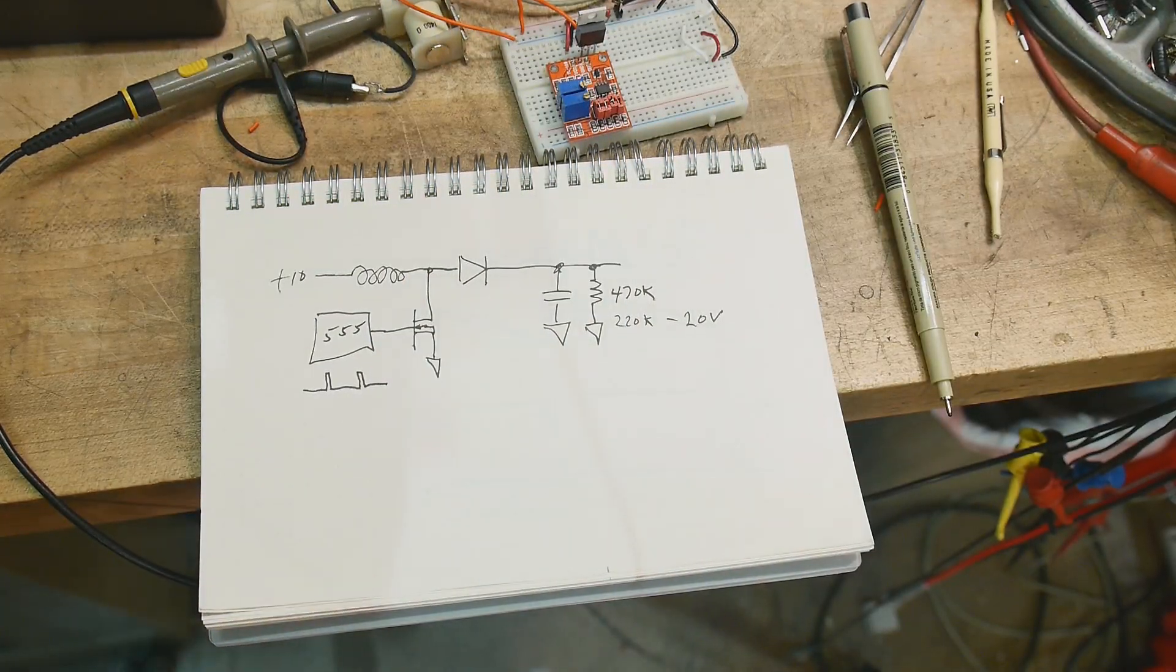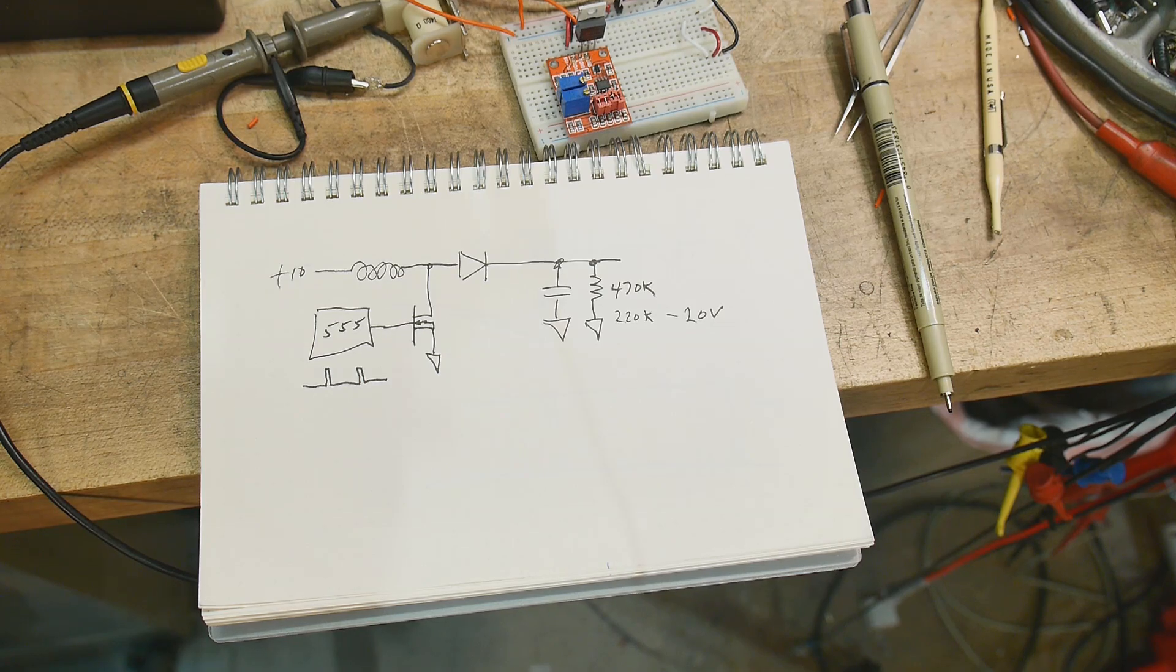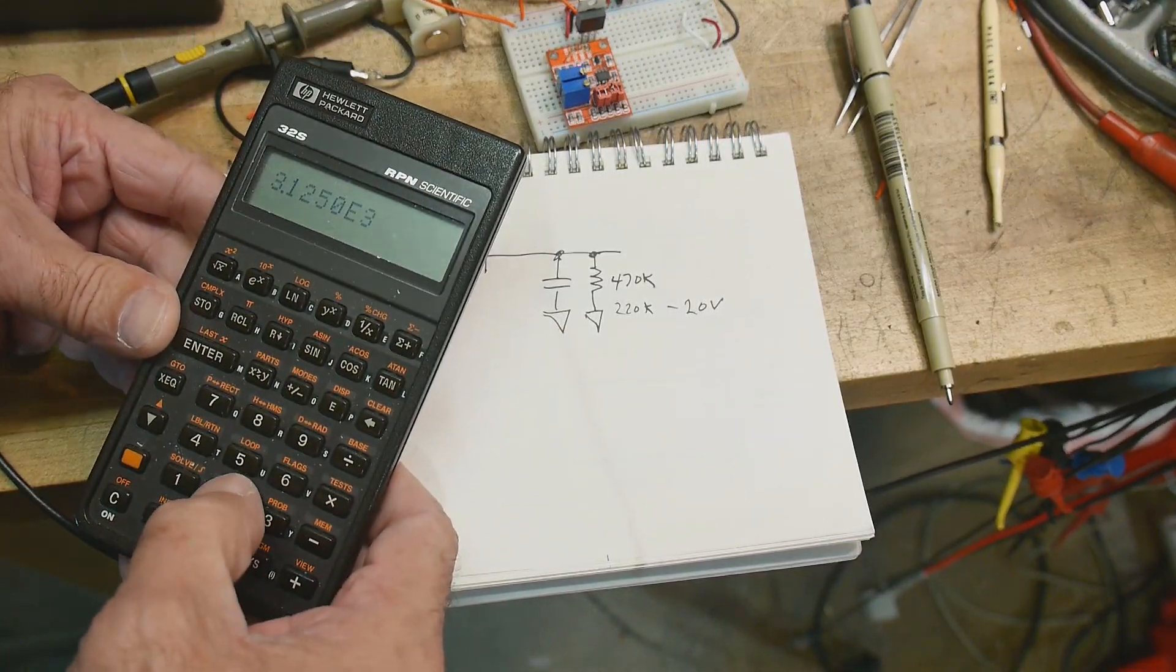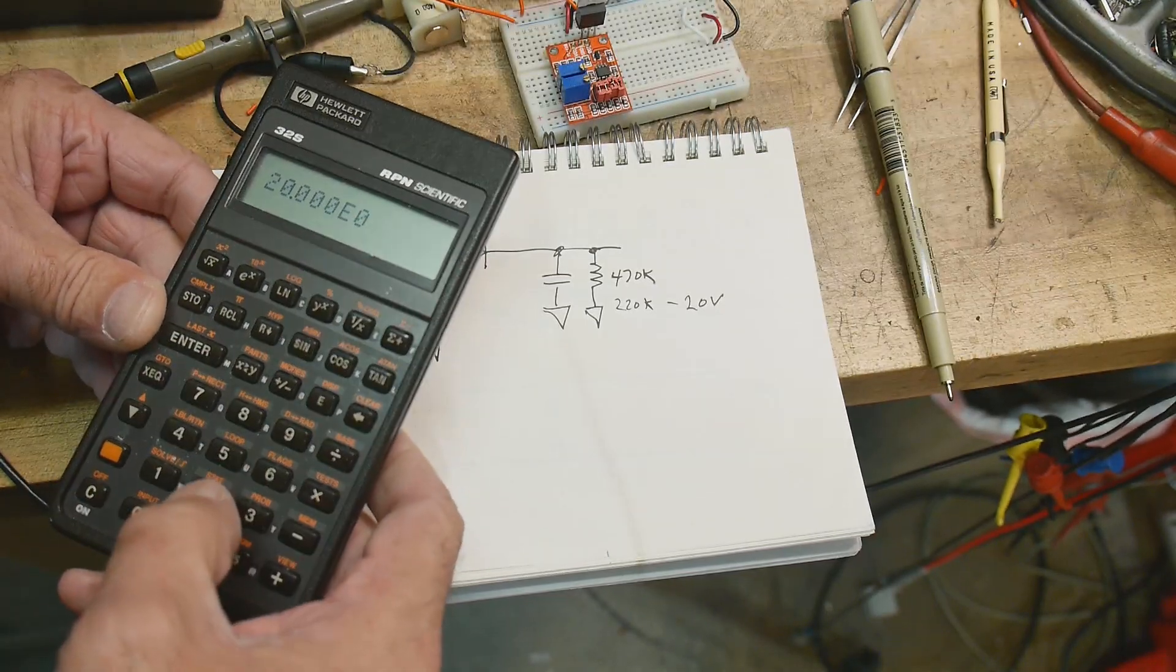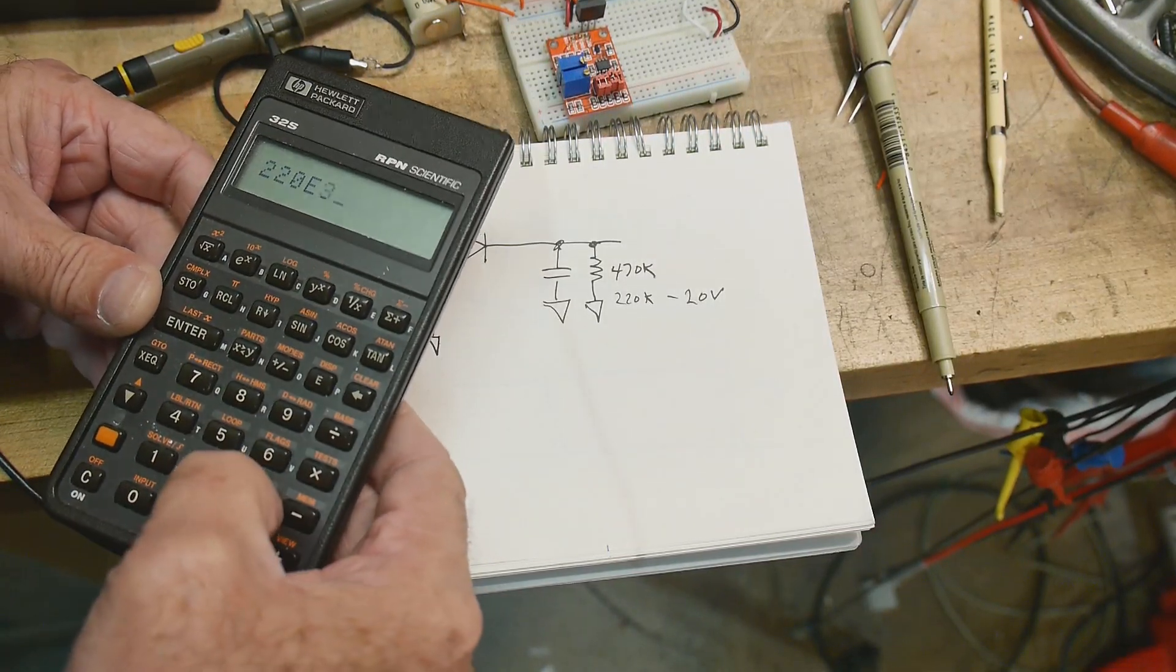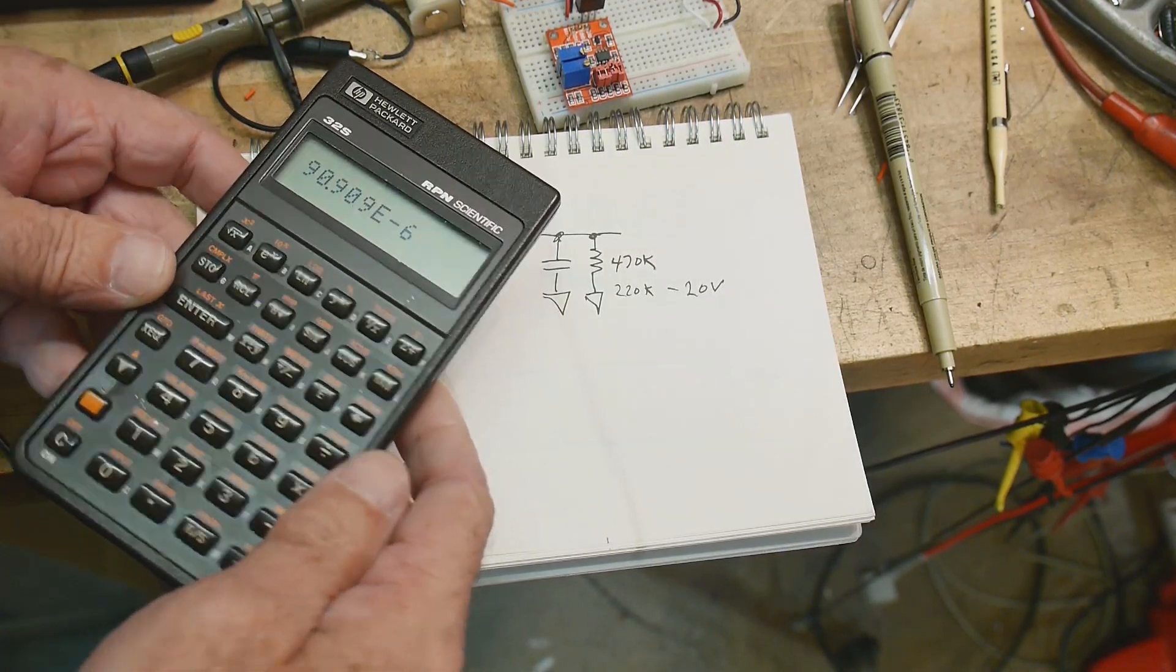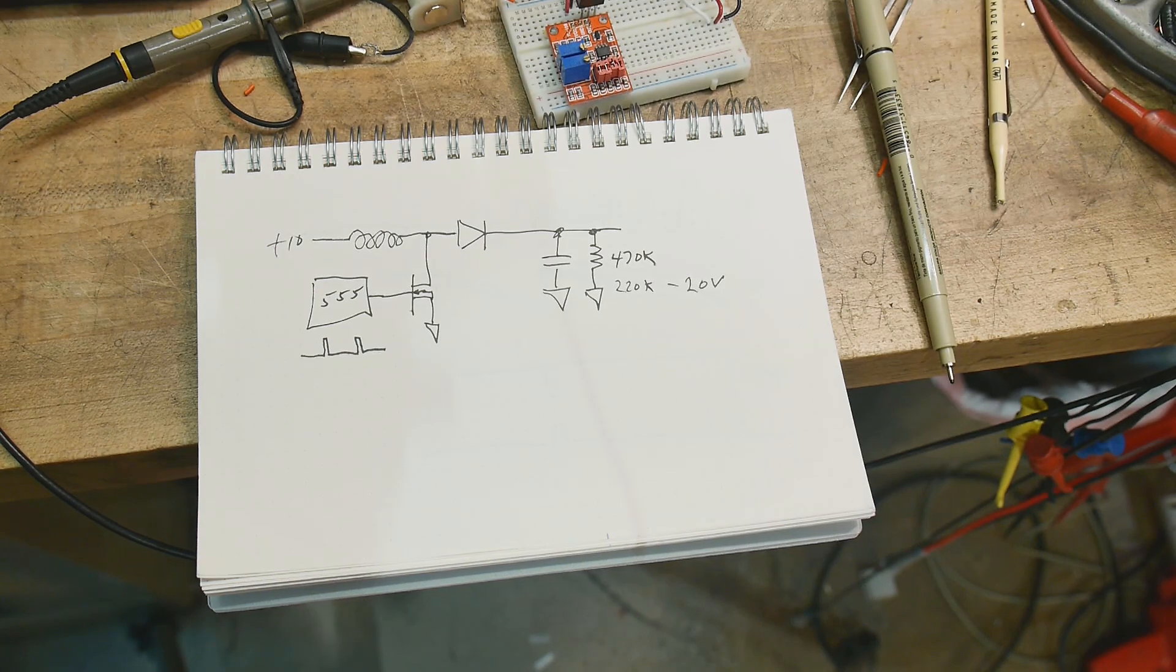So if we do the math on that, let's see, we've got 20 volts and 220k, which is 90 microamps. So we're getting 90 microamps out of this converter.